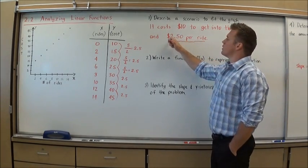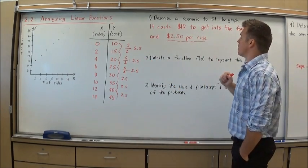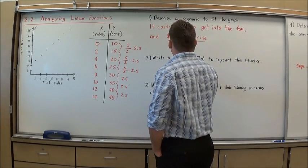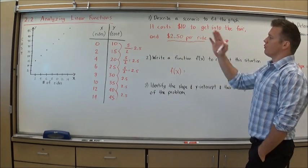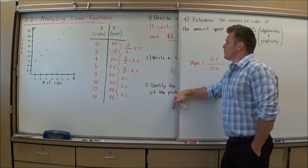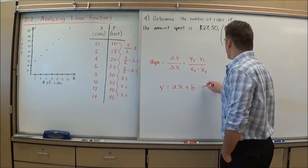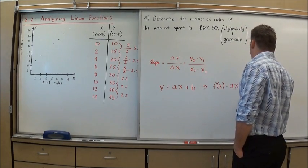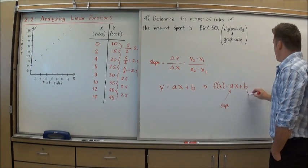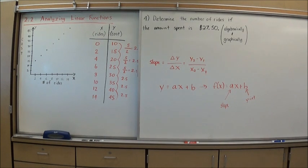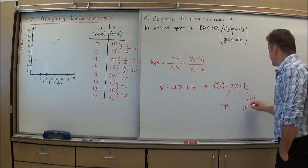That gives me a good situation for the problem. Also, whenever you see that 'per' or 'each', that tells you the slope, which verifies with the first differences. My slope was 2.50. Now it says write a function f(x) to represent the situation. If it is a linear function, it will have this form: f(x) equals ax plus b. In this case, the a is our slope or our constant rate of change, and our b is our y-intercept. The slope is always that rate of change, and the y-intercept is almost always just a starting point or an entry cost.